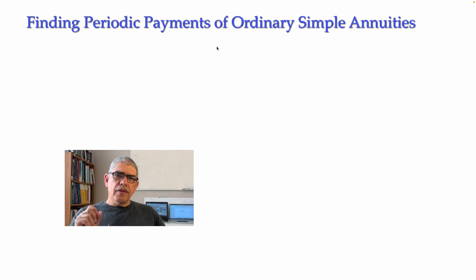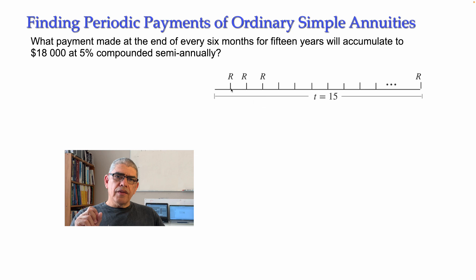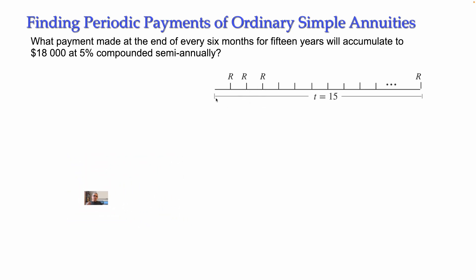The first example will be the case when we have a problem related to a future value. The problem is: what payment made at the end of every six months for 15 years will accumulate to $18,000 at 5% compounded semi-annually? The annuity has periodic payments every six months for 15 years, so it's a semi-annual payment. In this problem we know the amount at the end — $18,000 — so this is a future value problem and we need to compute the payments.